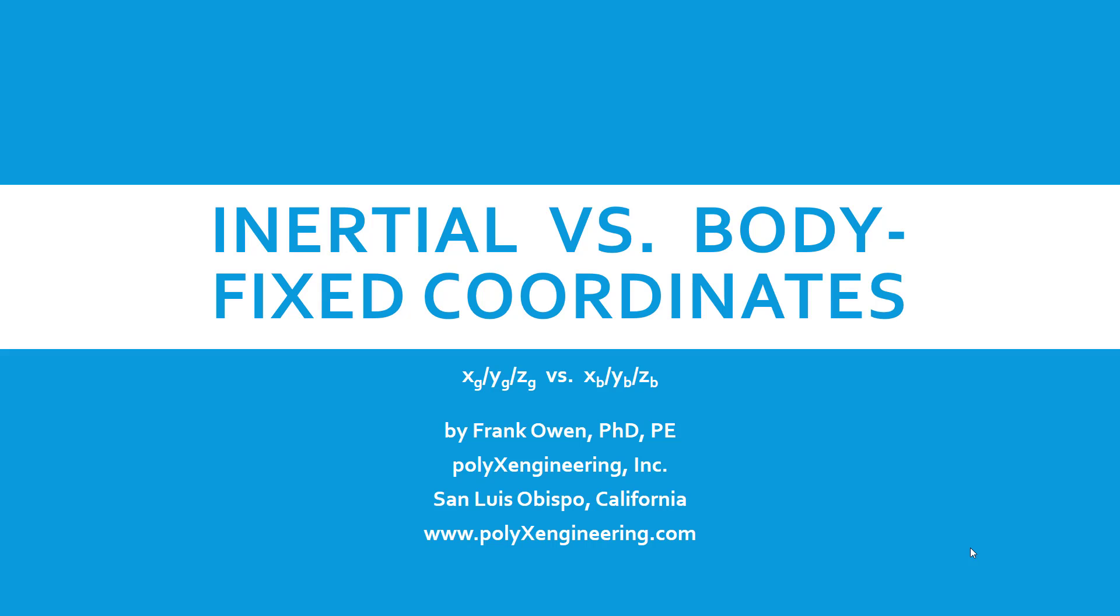In this video we will look at the angular relationships between the inertial coordinate system and the body-fixed coordinate system, both of which are commonly used in flight mechanics. The inertial system is attached to the Earth and is designated by the subscript G. The body-fixed coordinate system is attached to the airplane and moves with the airplane, and it is designated by the subscript B.